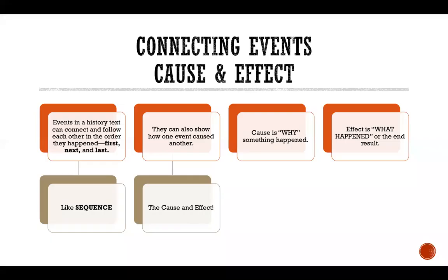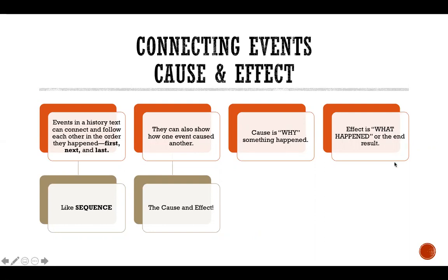When thinking about connections and steps, remember: events in a history text connect and follow each other from first, next, and last — like sequence — and are connected like puzzle pieces. They also show how one event caused another. The people in England could not practice their own religion, which caused them to want to move to a different place. Those connections in history act like cause and effect. Cause is why something happened, and the effect is what happened.